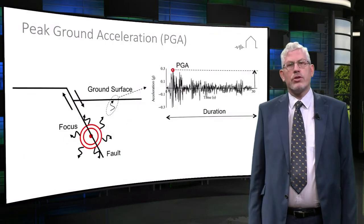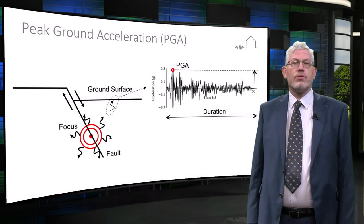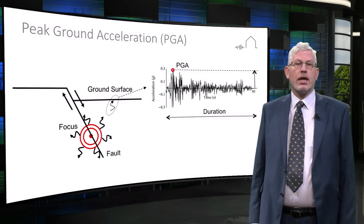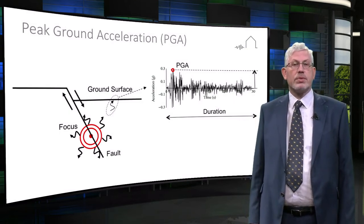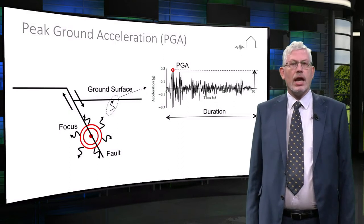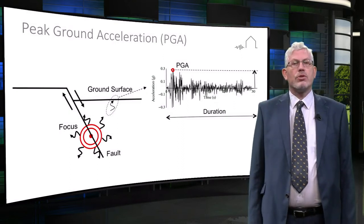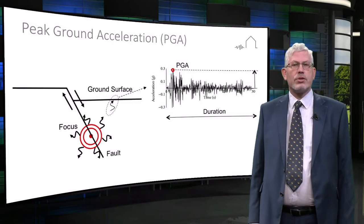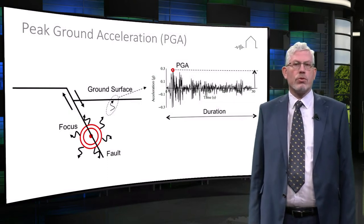The next key parameter to consider is peak ground acceleration, often referred to as PGA. PGA is equal to the maximum ground acceleration that has occurred during earthquake shaking at a specific location. As shown in the graphic, PGA is equal to the amplitude of the largest absolute acceleration recorded on an accelerogram during an earthquake. It is one instant in time in the overall earthquake record.